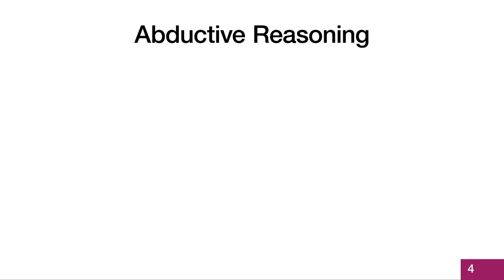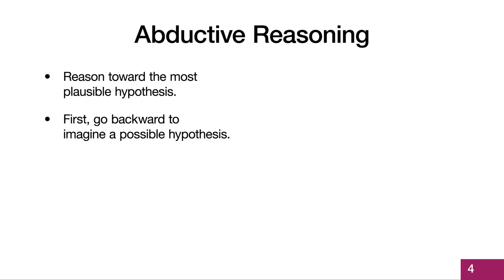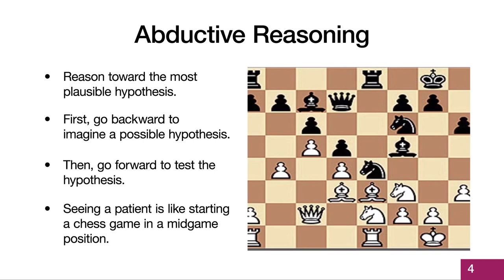If the diagnosis is not immediately recognizable, we use a method called abductive reasoning where we reason toward the most plausible hypothesis. To start this process, we have to think backwards to imagine what might have caused the patient's present illness. Once we establish a list of plausible hypotheses, we go forward to test them. It's a little like starting a game of chess in a mid-game position — the game has already started and we are trying to figure out which disease is causing our patient's present illness.